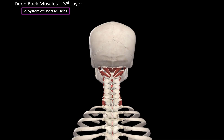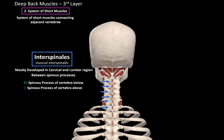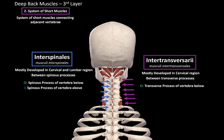Next, we have the system of short muscles, connecting adjacent vertebrae together. They consist of the interspinalis, which are mostly developed in the cervical and lumbar region but also present in the thoracic region with less muscle fibers. The interspinalis are located between the spinous processes, originating from the spinous process of the vertebrae below and inserting at the spinous process of the vertebrae above. The other muscle is the intertransversarii, mostly developed in the cervical region, lying between the transverse processes of the vertebrae — originating from the transverse process below and inserting at the transverse process above.